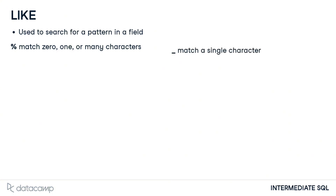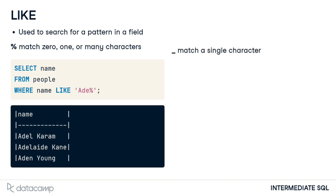The % wildcard will match 0, 1, or many characters in the text. For example, the query on the left matches people like Adele, Adelaide, and Aden.